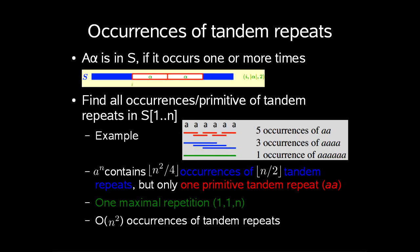So to define occurrences of tandem repeats in our string S, a tandem repeat alpha alpha is in S if it occurs one or more times in S. Note that an occurrence can be encoded in constant space as i, length of alpha, 2. Our computational problems are first to find all occurrences of tandem repeats in the string, and second to find all primitive tandem repeats in S.